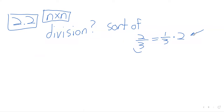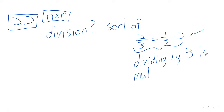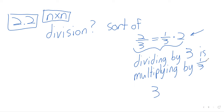In the real number context, dividing by three is the same as multiplying by one-third. What's the relationship between three and one-third? They're multiplicative inverses — three times one-third equals one.